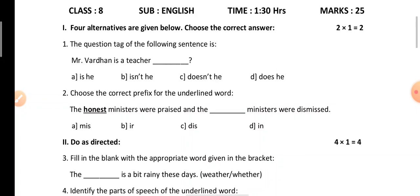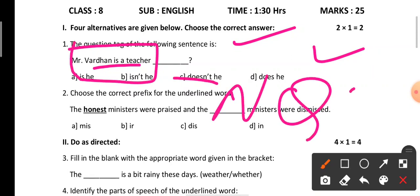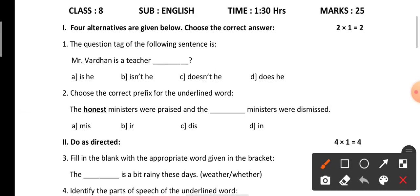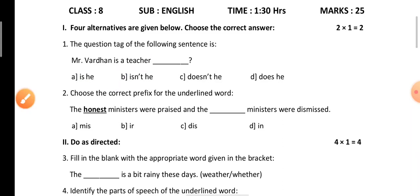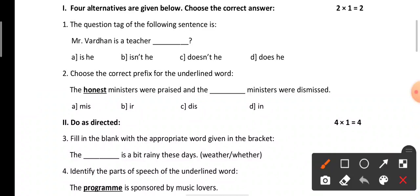So next, four alternatives are given below — choose the correct answer. This is the first main and it is based on grammar. The first question is the question tag of the following sentence. As we all know, if the sentence is positive we have to add a negative question tag. So the answer for 'Mr. Vardin is a teacher ___' is option B: isn't he.